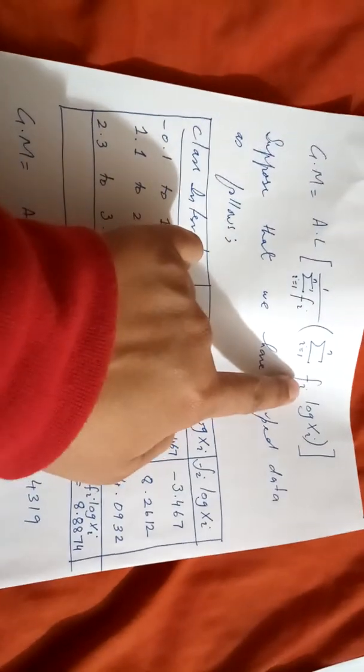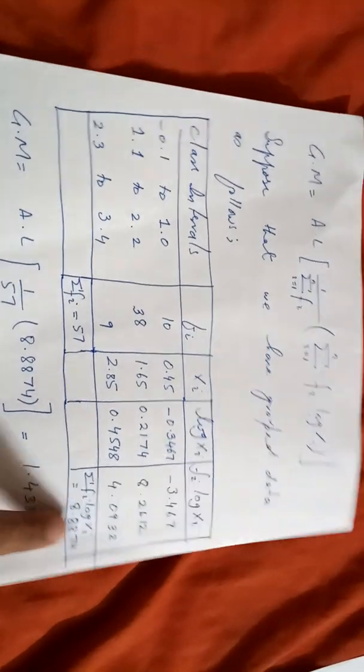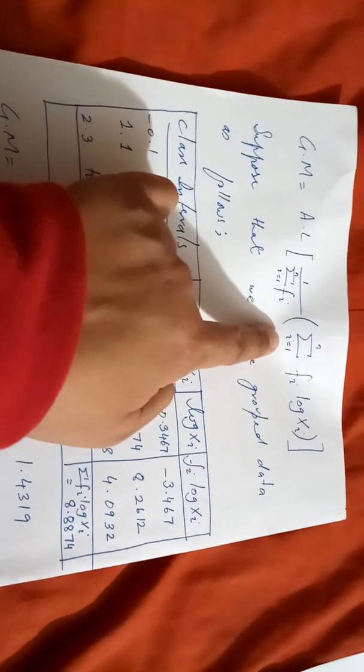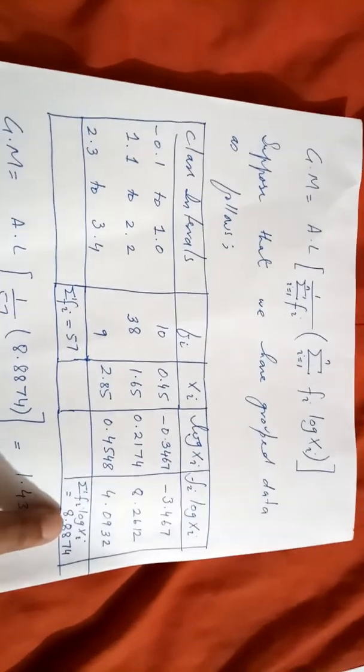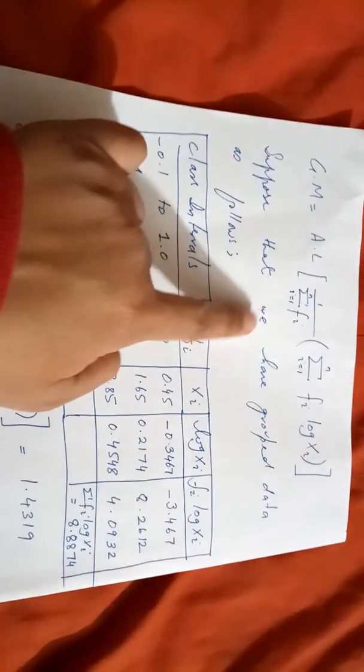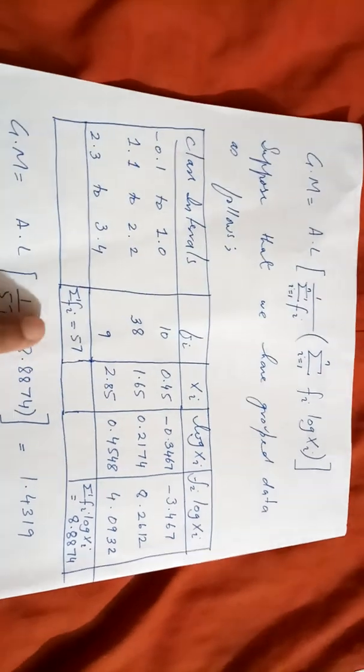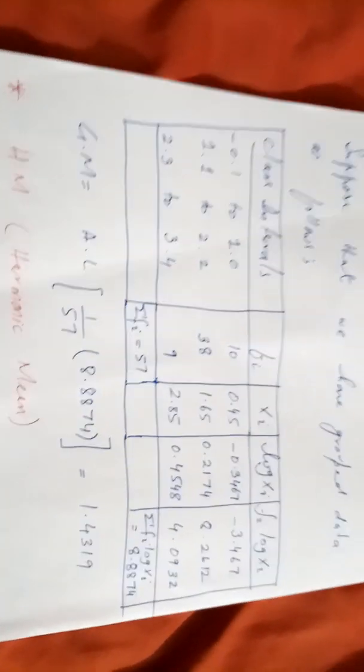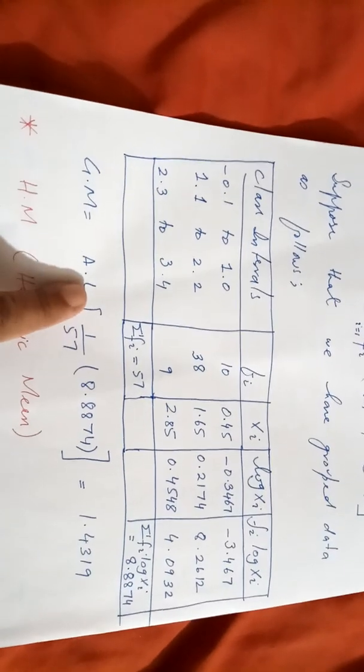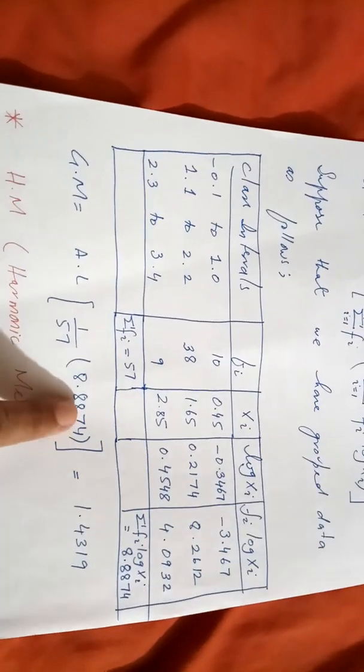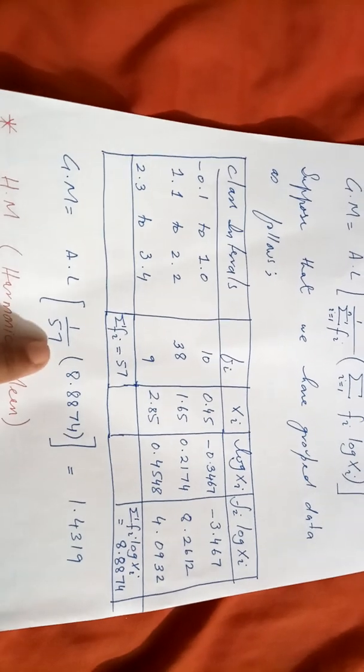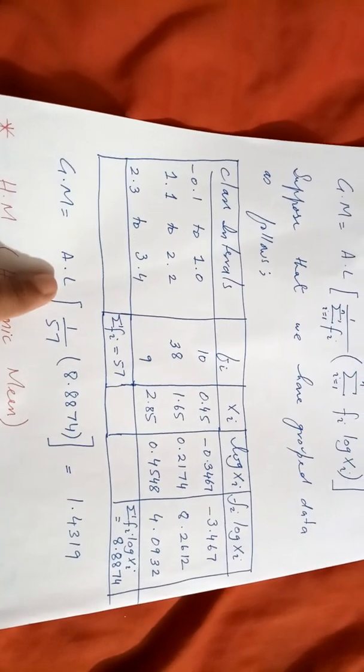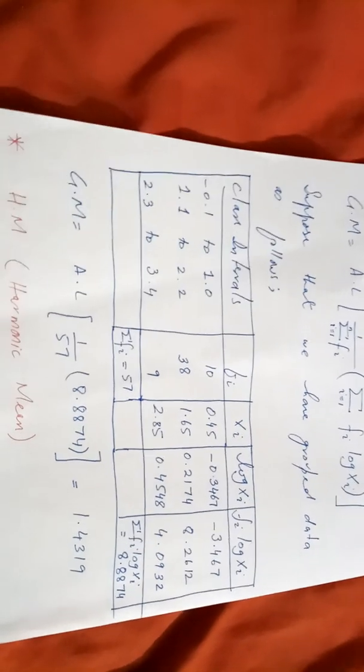Right. See, so this is the numerator 8.8874, this whole thing sum of f log x, and then I have to divide this by summation f, that is 57. And that is why you see geometric mean is antilog of this thing. So I divide 8.8874 by 57, and then I use my calculator to take the antilog.